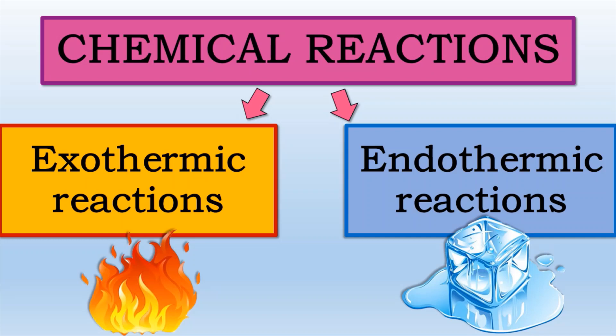Exo means outside, endo means inside, and thermic means heat. So when we are talking about an exothermic reaction, the heat is released to the outside. For an endothermic reaction, the heat goes inside.